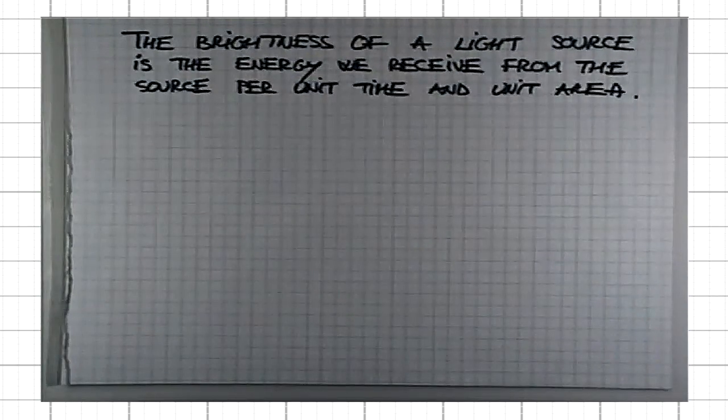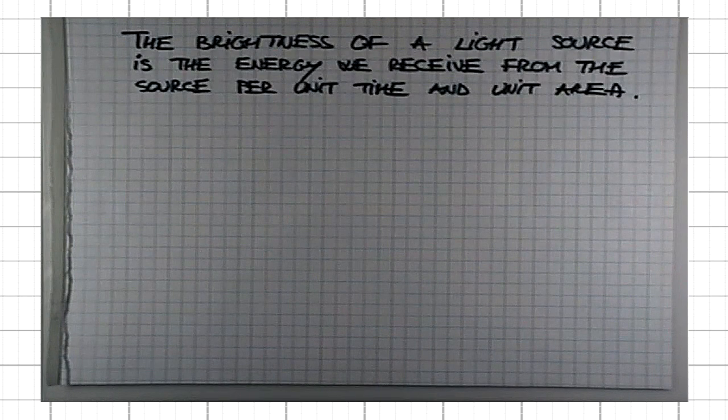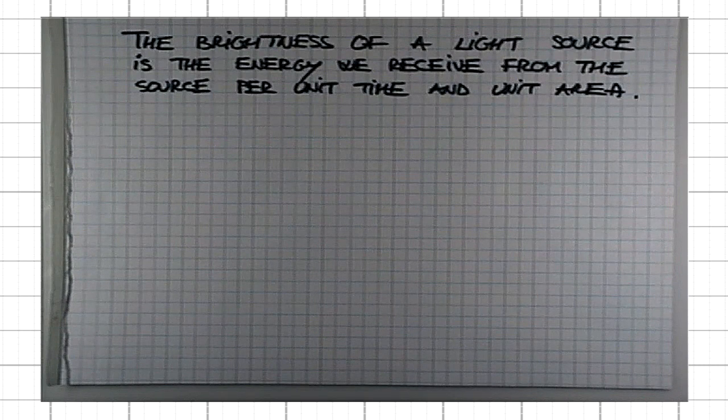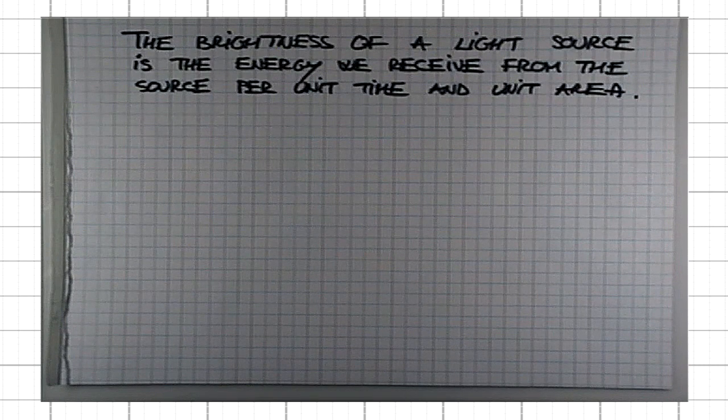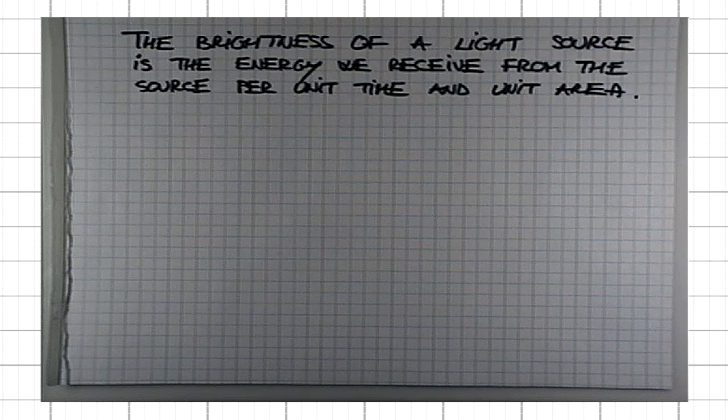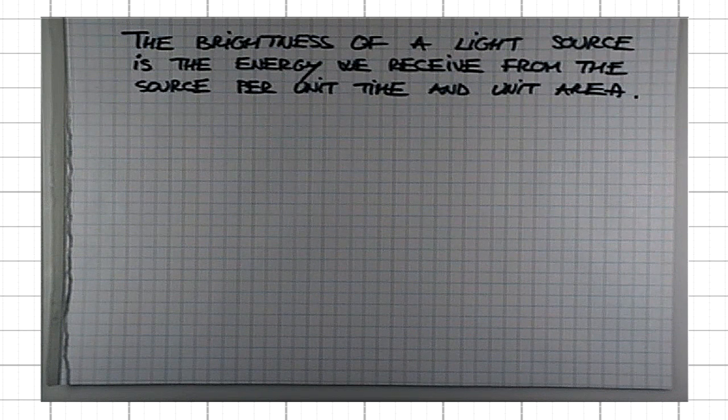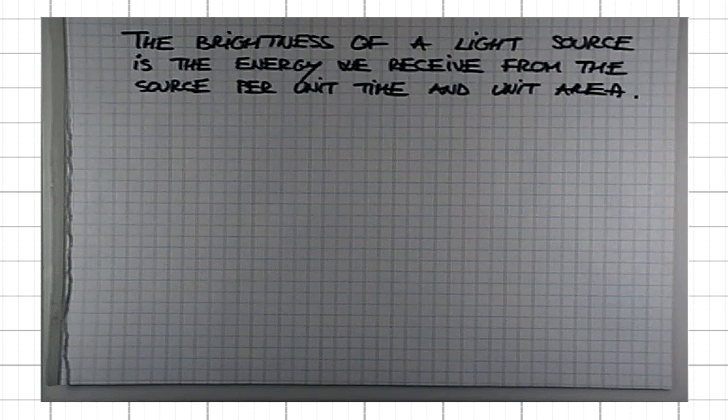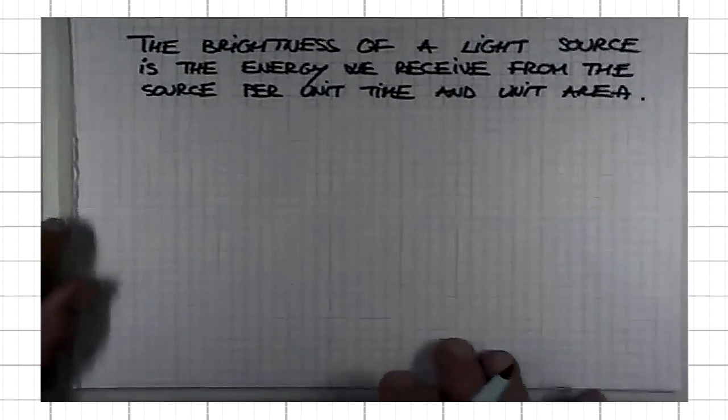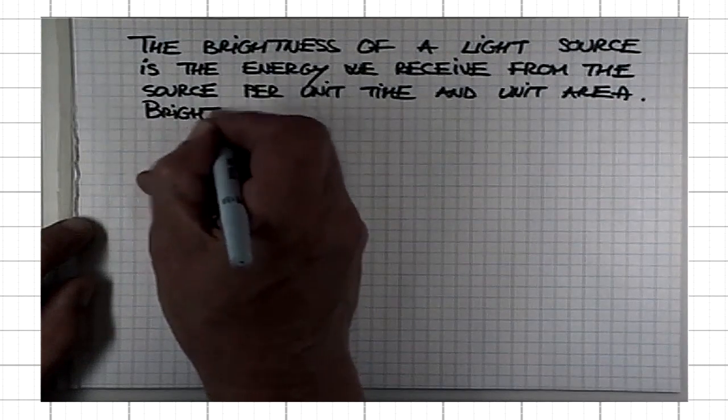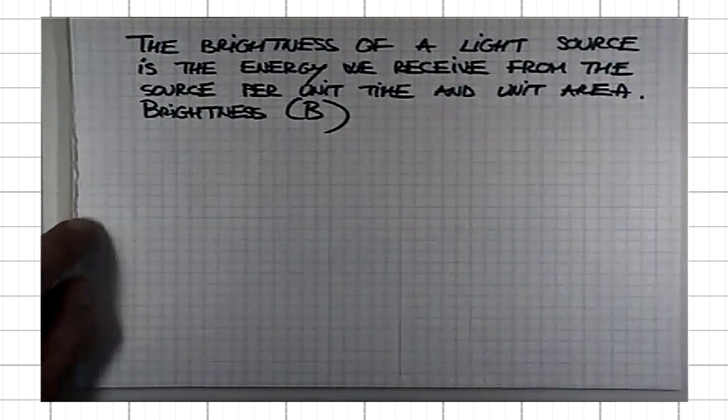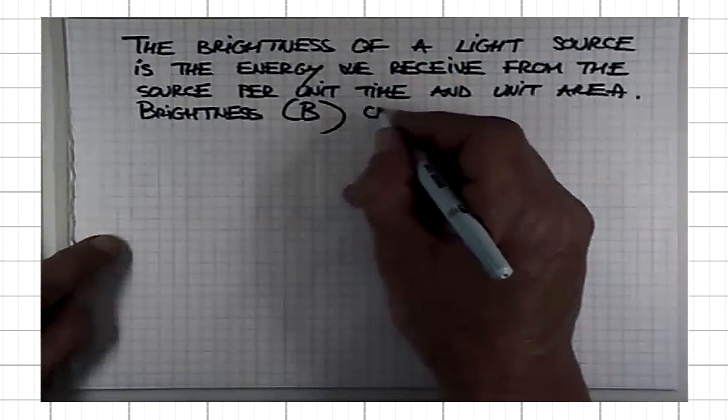We can always measure it. There are devices that are used to measure precisely the amount of energy that we receive from the light source per unit time and unit area. Depending on the nature of the source, the nature of the instrument changes, but it's done. We denote brightness with capital B, which can always be measured.